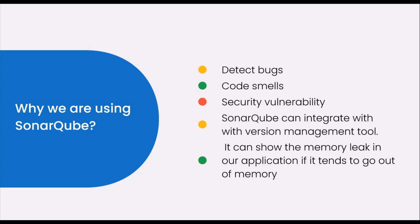Code smells are not actual bugs — they are improvements to make code easier to maintain in the future. Next are security vulnerabilities. SonarQube detects security issues, for example if we open a database connection but forget to close it, SonarQube suggests closing it. The same applies to all resources like file operations — any resource that needs to be closed will be flagged automatically.